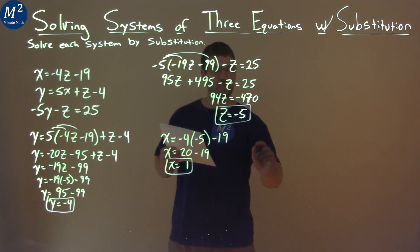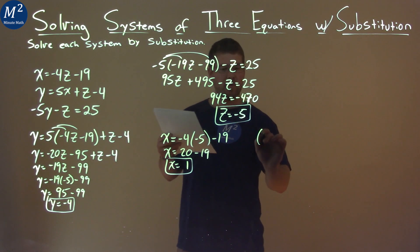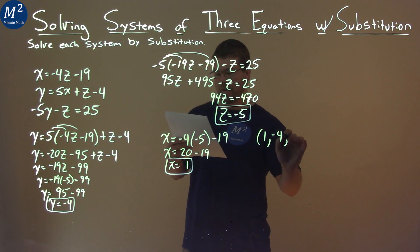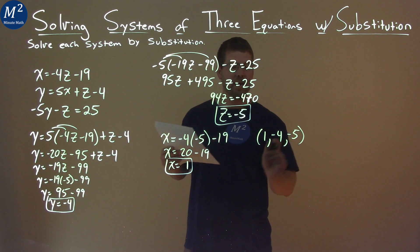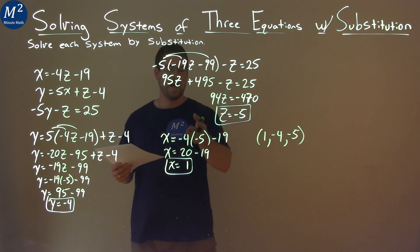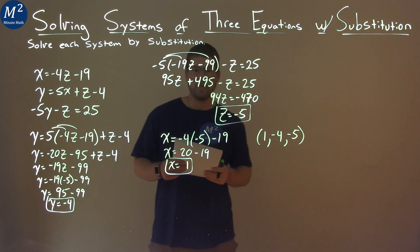And so we have x equals positive 1 right here. And there's our answers. We can write it as a coordinate point: 1, negative 4, negative 5. And that's it. That's our final answer. x is 1, y is negative 4, and z is negative 5.